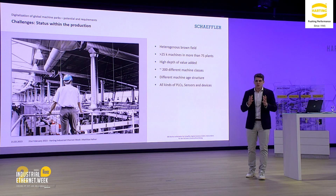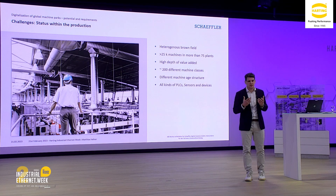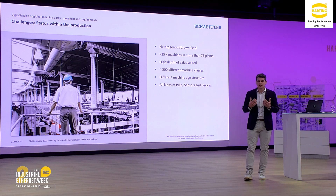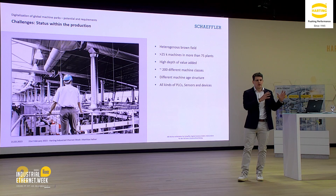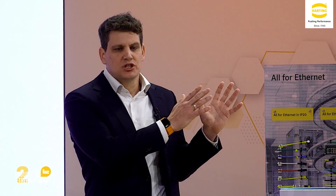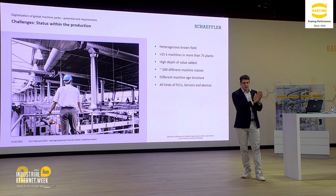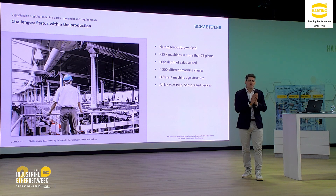When we look into production, we currently see a heterogeneous brownfield. We ourselves have more than 25,000 machines within 75 plants, with a high depth of value-added processes covering more than 200 different machine classes — from very big heat treatment machines to form and harden our metal, to the finishing processes of grinding and honing. We also have a totally different age structure: we have machines within Schaeffler producing bearings and systems that are sometimes 30 years old. With good maintenance, that's totally no problem — we produce very high quality with these machines and the processes are optimized.